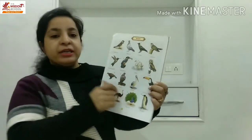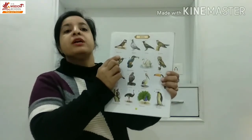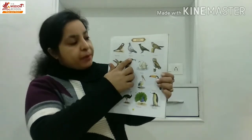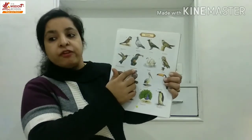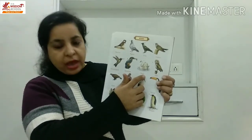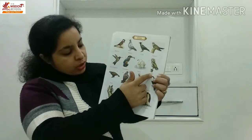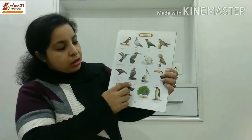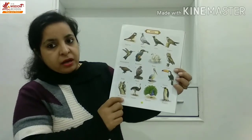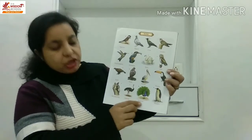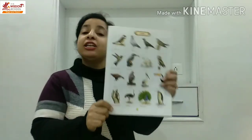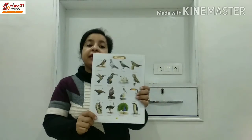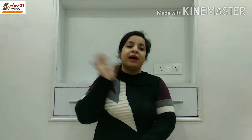Toh humne kitne birds dekhe? Abhi dhyan se bolo mere saath: sparrow, pigeon, crow, cuckoo, kingfisher, swan, owl, eagle, hawk, woodpecker, ostrich, peacock, penguin. Yeh sab maine aapko kya karvaiye aaj? Birds. Aapne inko achhe se identify karna hai apni book mein aur inke names ko learn karna hai. Okay bachcha, okay, bye bye, take care.